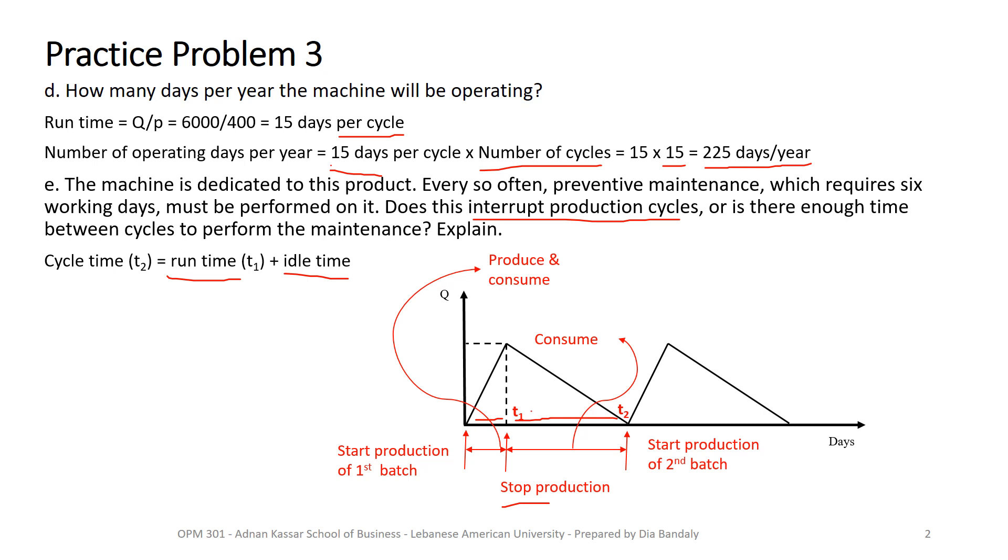And this is what we want to find in order to verify whether the preventive maintenance would interrupt our cycles. Why? Because during my idle time, I can do anything with my machinery. So let's find the idle time then. So I'm going to use this equation where my unknown is the idle time. Idle time is cycle time minus run time. What's our cycle time? Cycle time, we can find it by Q over D, which is 6,000 over 300. That's 20 days. So that's it. This is my cycle time, which is T2, is 20 days.